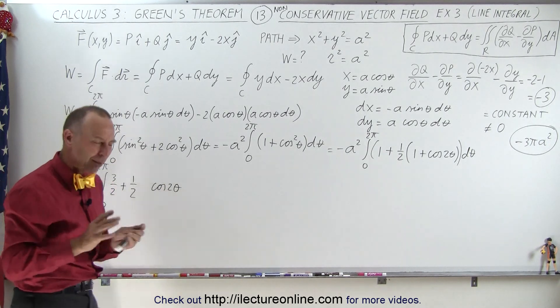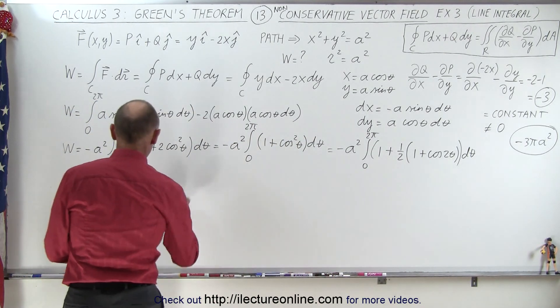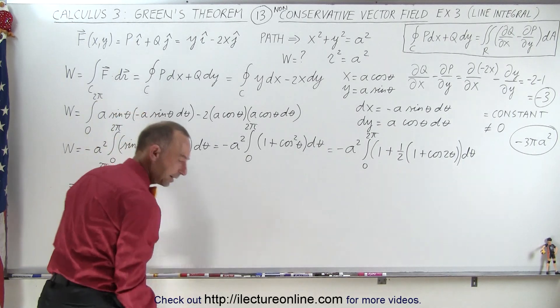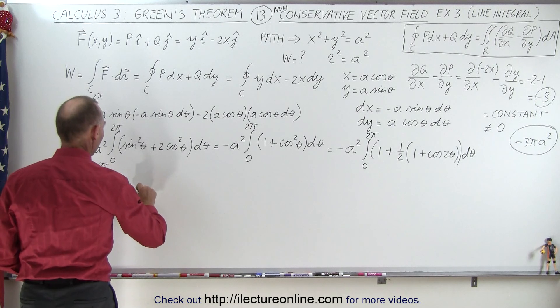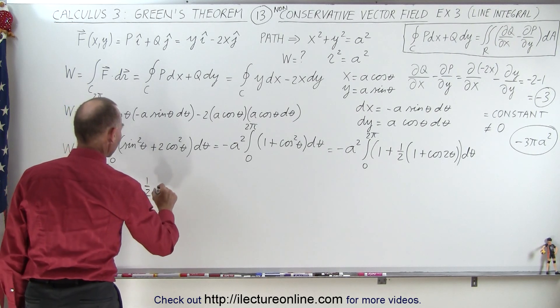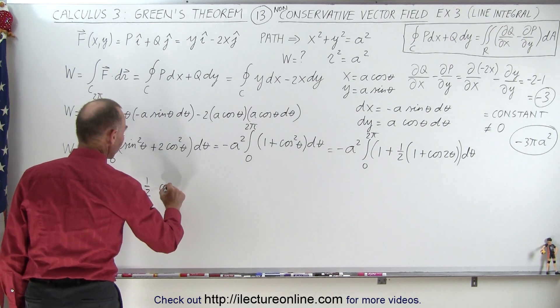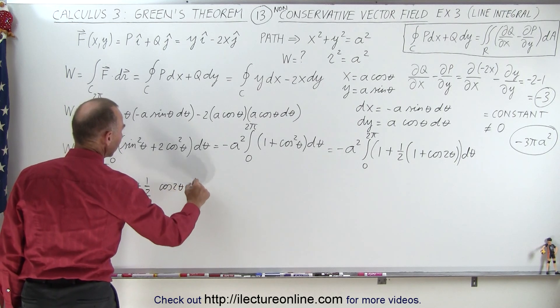You know what? I'm going to split it up into two separate integrals, or at least I'm going to rewrite it just slightly differently. So it would be 3 halves times d theta plus 1 half times the cosine of 2 theta d theta.